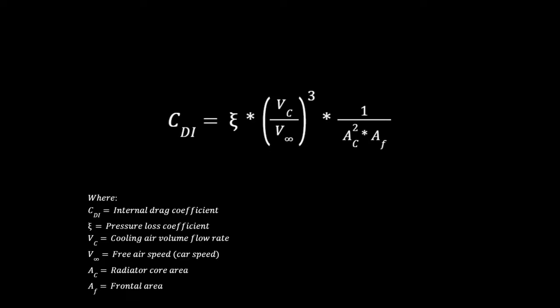When we look at the internal drag coefficient's equation we can start to see how complicated the system can get. We just saw that the more air we flow through the system the more heat transfer we have but we also have more drag. The ratio of the cooling air volume flow rate to the car speed is to the power of 3 so that heavily influences the amount of internal drag we have. The cooling air volume flow rate is just the mass air flow rate divided by density so there's a trade-off. We want more air for more heat transfer but more air also generates a lot more internal drag.